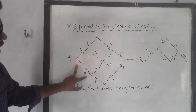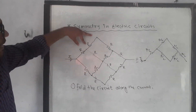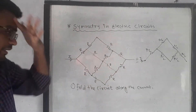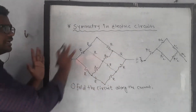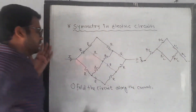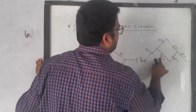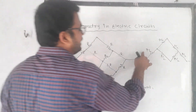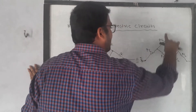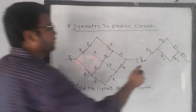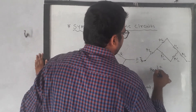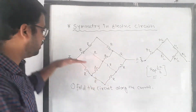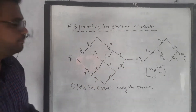After folding, this R is in parallel with that R, giving R/2; similarly all branches become R/2. The redrawn circuit has R/2, R/2, R/2, and R/2 all in series, giving R/2 + R/2 + R/2 as 3R/2. So the equivalent resistance between the terminals is 3R/2. This is the first rule of symmetry: fold along the current.